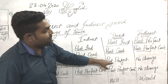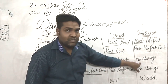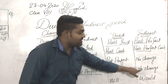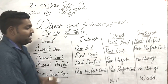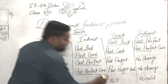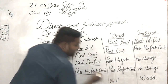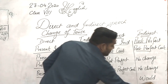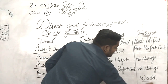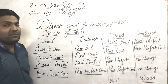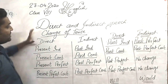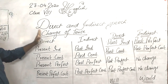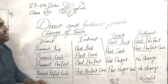Past perfect — no change. And past perfect continuous will always remain the same. In sentences where there is 'will', we always use 'would' instead of 'will'. So this is the tense changing in direct and indirect speech.